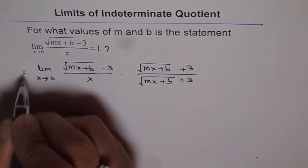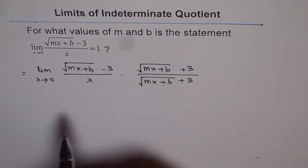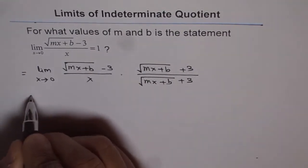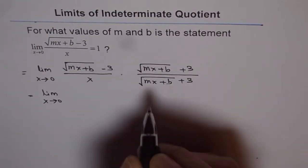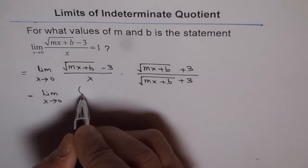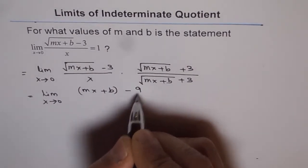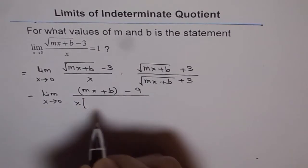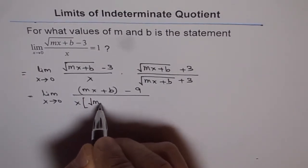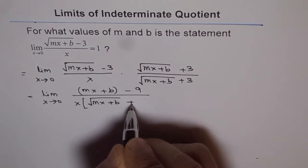So that is how we'll try to find the limit, and later we'll equate that to 1 and find m and b. So when we do this, we get limit x approaches 0, and in the numerator, we get mx plus b minus 9, and in the denominator, we get x times square root of mx plus b plus 3.